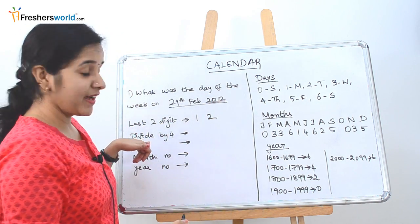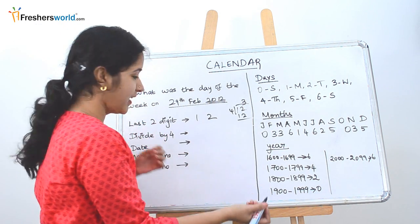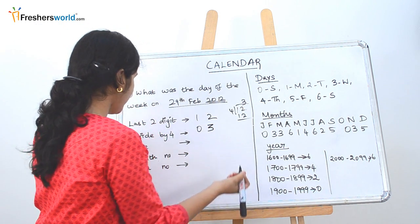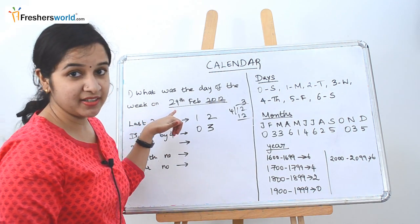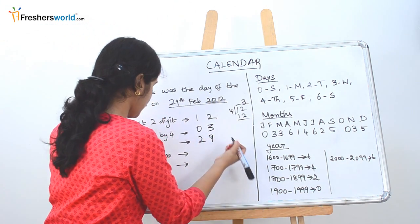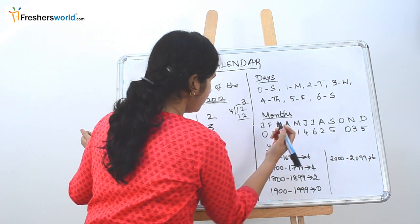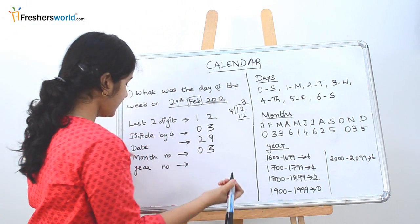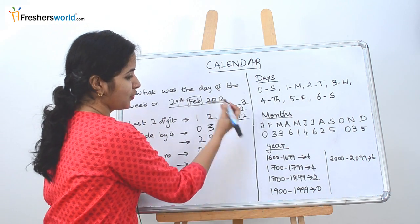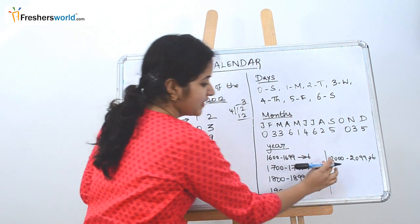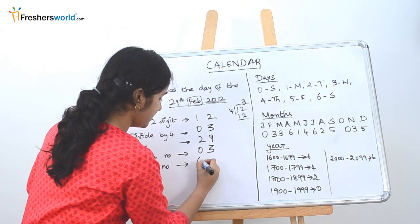Next step is divided by 4. So if we divide 12 by 4, we know that the quotient is 3. So we put it here. Next is the date. So what is the date that they have given? 29. So next is the month number. February corresponds to 3. So we put 3 here. Next is the year number, which is 2012. So 2012 falls between the bucket of 2000 to 2099, which is nothing but 6.